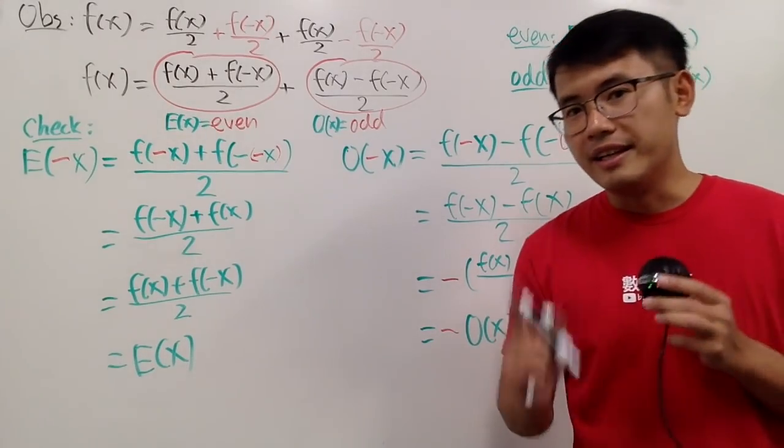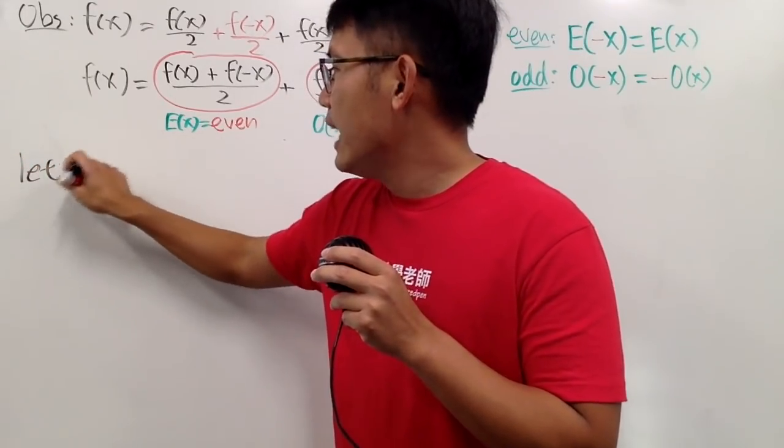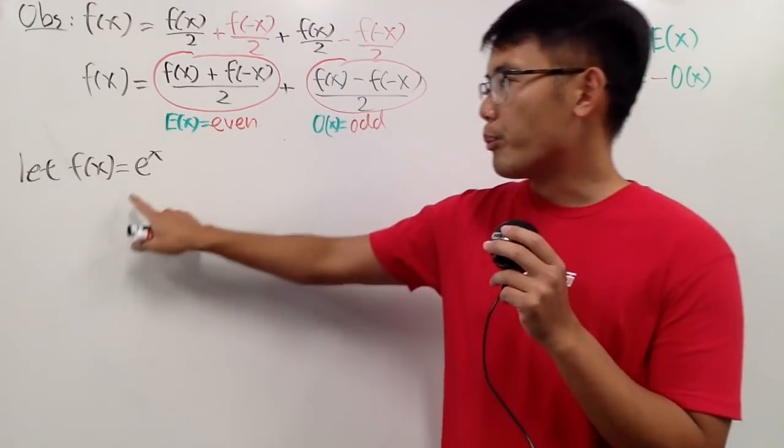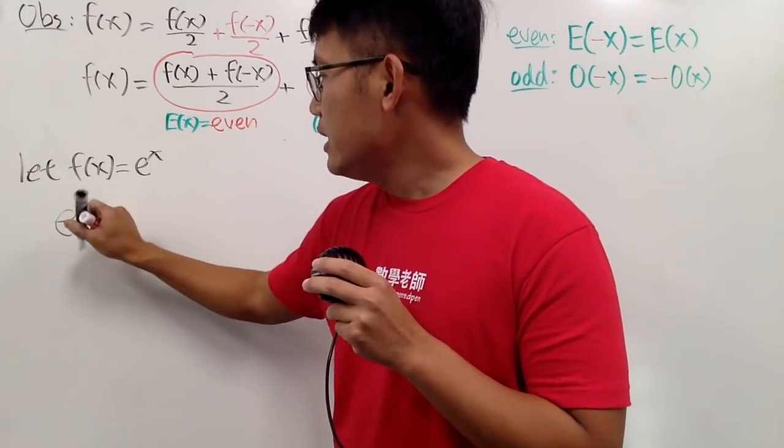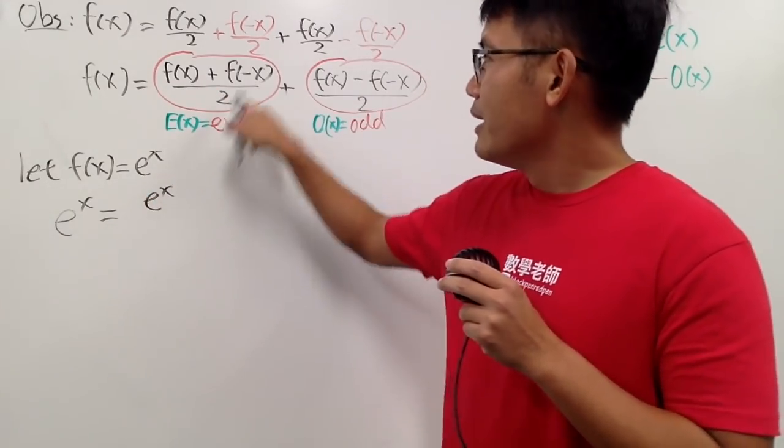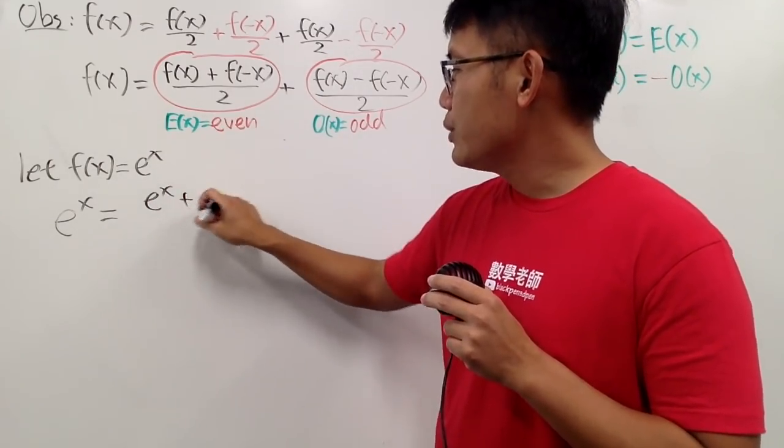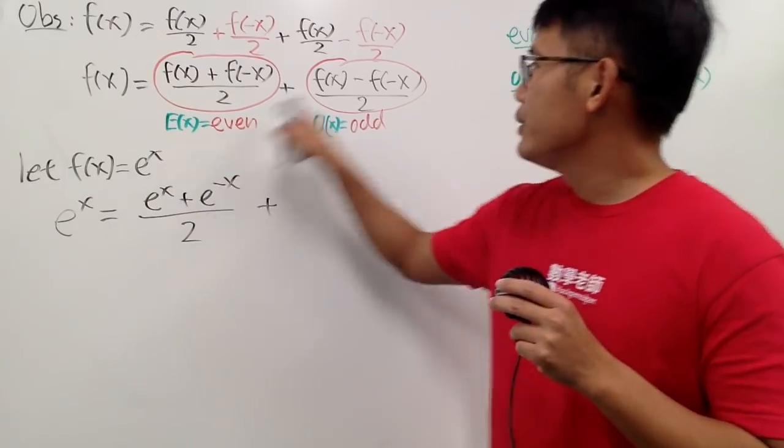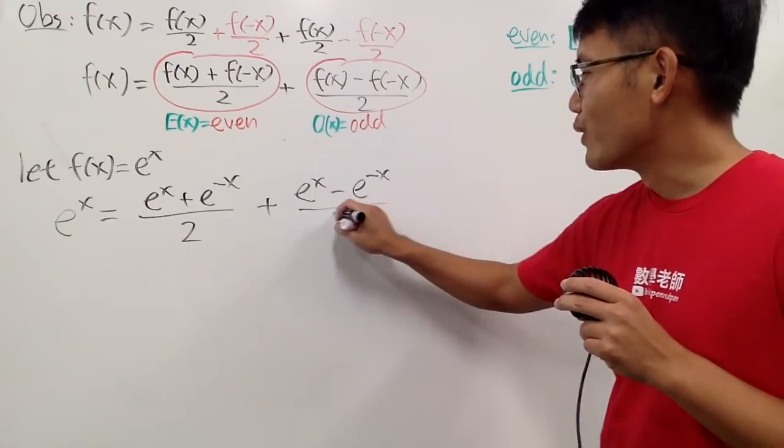The example I'll do with you is I will let f of x equal to e to the x. Let's consider e to the x right here. And we will break this down into its even part and its odd part. So we see that e to the x is equal to, f of x is just e to the x, and f of negative x is e to the negative x. So it's e to the x plus e to the negative x all over 2. And we are adding this with e to the x minus e to the negative x all over 2.